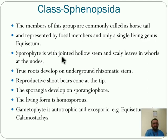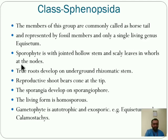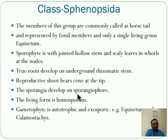First, the sporophyte has a jointed hollow stem with scaly leaves and whorls at the nodes — at the nodal part, a number of leaves arise, known as whole leaves. True roots develop on the underground rhizomatous stem. Reproductive shoot bears a cone at the tip. Sporangia develop on the sporangiophore. The living form is homosporous only — this is one important character of Sphenopsida. Gametophyte is autotrophic and exosporous. Examples: Equisetum and Calamostachys.